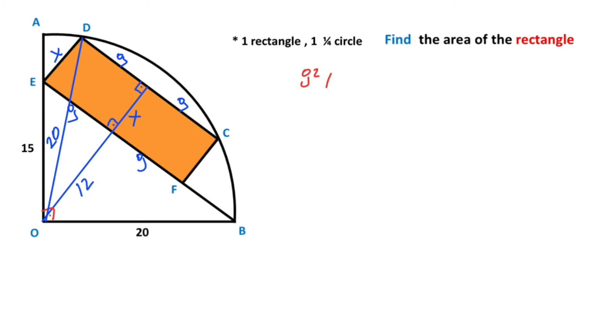So 9 squared plus (12 + x) whole squared equals 20 squared. So 81 plus...